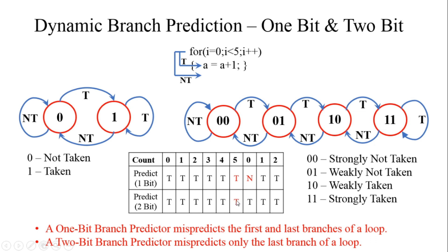After the misprediction at i=5, the for loop transitions from strongly taken to weakly taken state. After some further execution of the program, if the for loop executes again, it will be in the weakly taken state, because that is where it ended up at the last iteration.